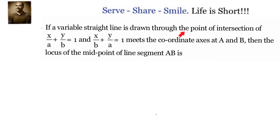We have been given a variable straight line passing through the point of intersection of two lines, and it meets the coordinate axes at A and B. We have to find the locus of the midpoint of line segment AB. There are three things to understand: first, what is the point of intersection of these two lines?